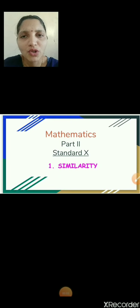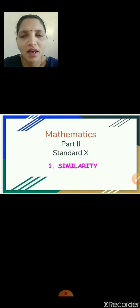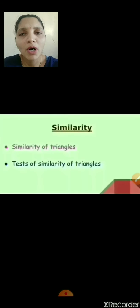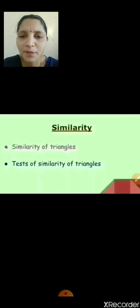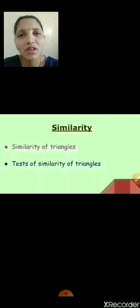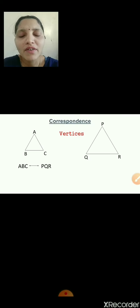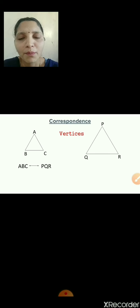Hello students, welcome back to the fifth online session of geometry. As you all know, we have started with the first lesson, that is similarity. In the previous session we have learned about the similarity of triangles and the tests of similarity of triangles. Now before starting this session, I want you all to do a quick revision of whatever we have learned in the last session. We have seen that to show two triangles are similar, we have to find the correspondence between them.